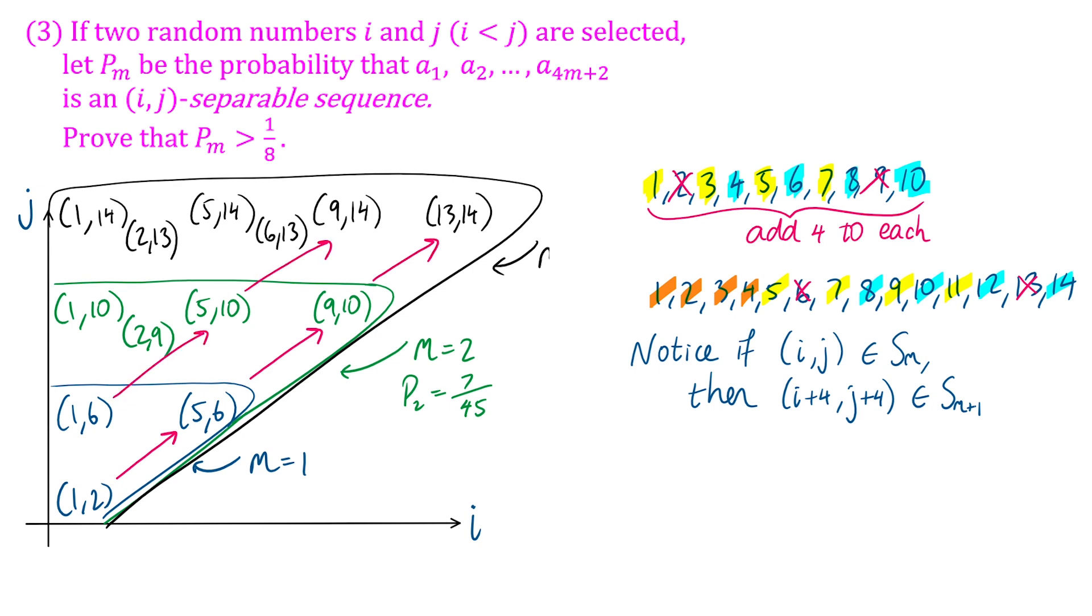In this diagram, we've really got solutions of two types. Highlighting these solutions where i is like 4k + 1 and j is 4k + 2. Then we've got these solutions, like (2,9), (2,13), where i is 4k + 2 and j is 4k + 1. And the number of those solutions is each going to be a triangular number. You can see it there in the diagram. Each time m increases by one, the number of each solution type also increases by one. So we can use this to actually count up the number of solutions.